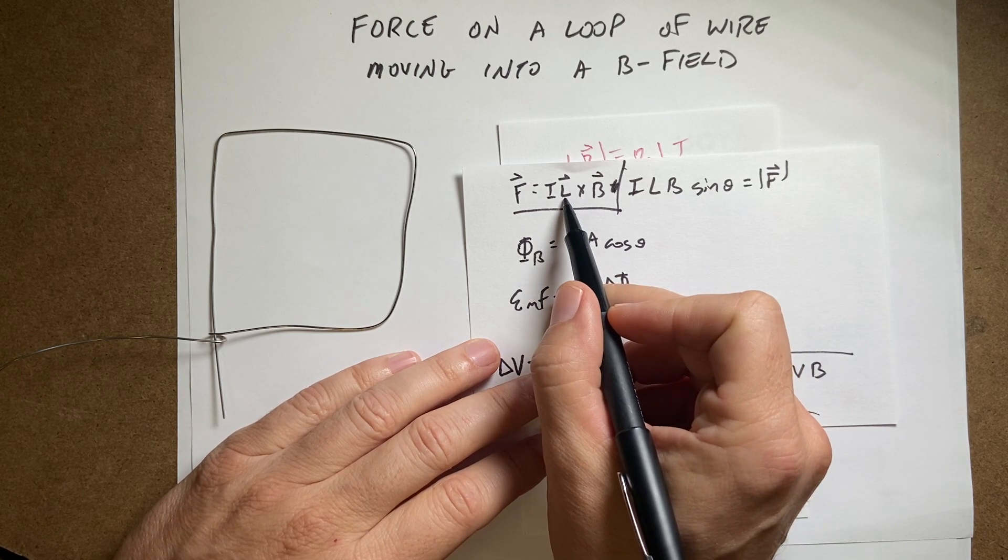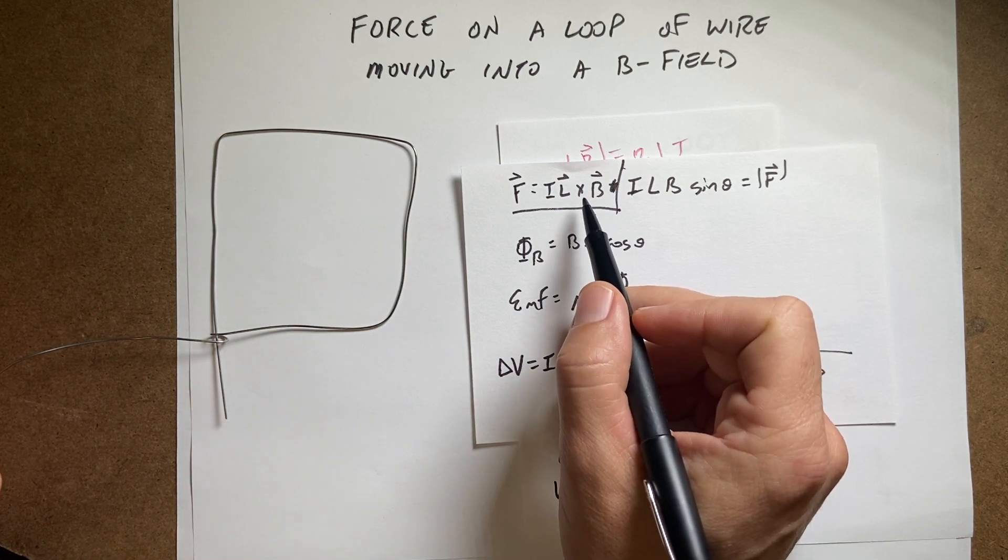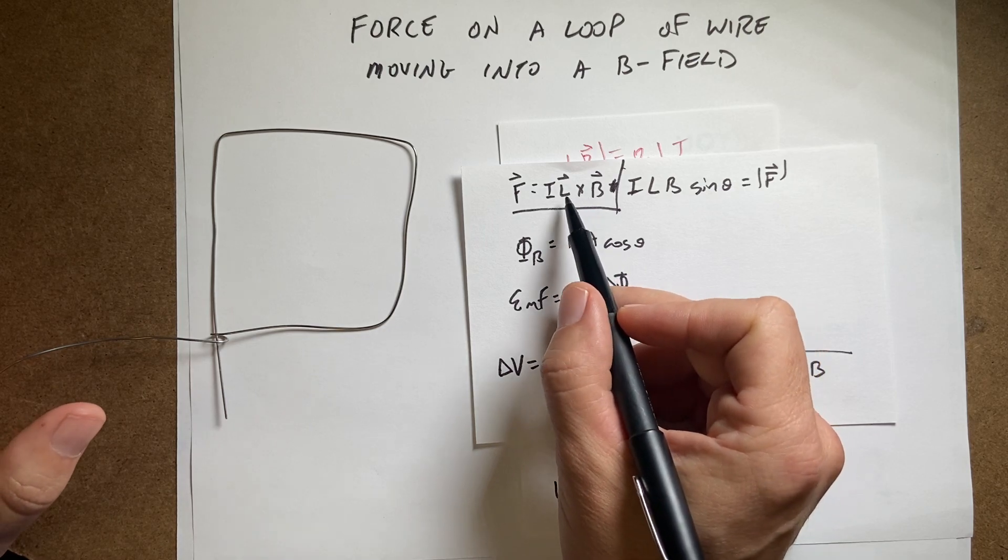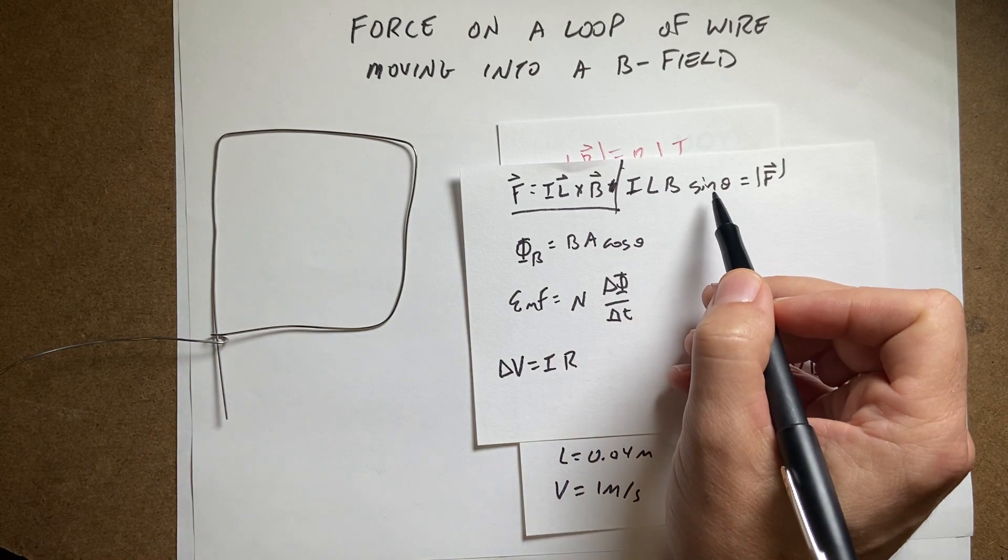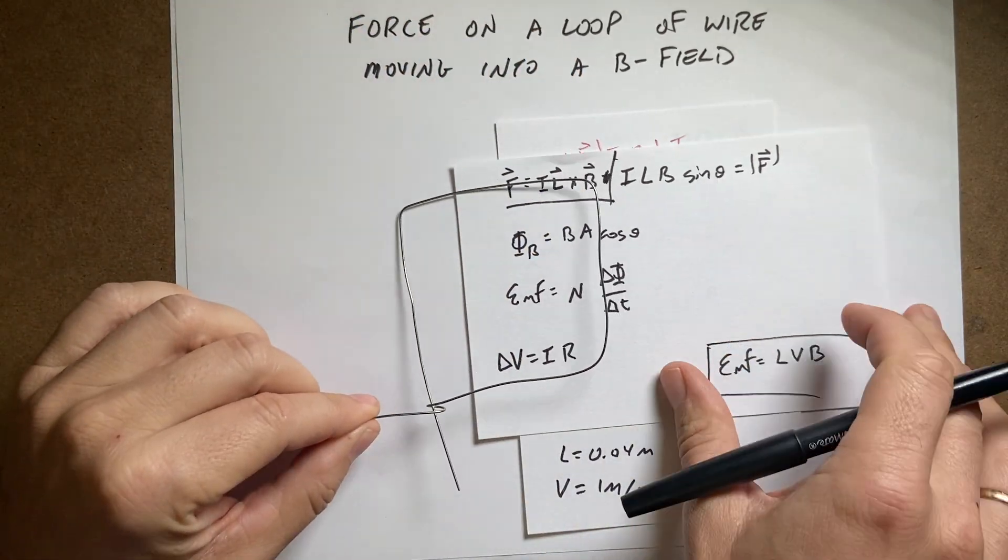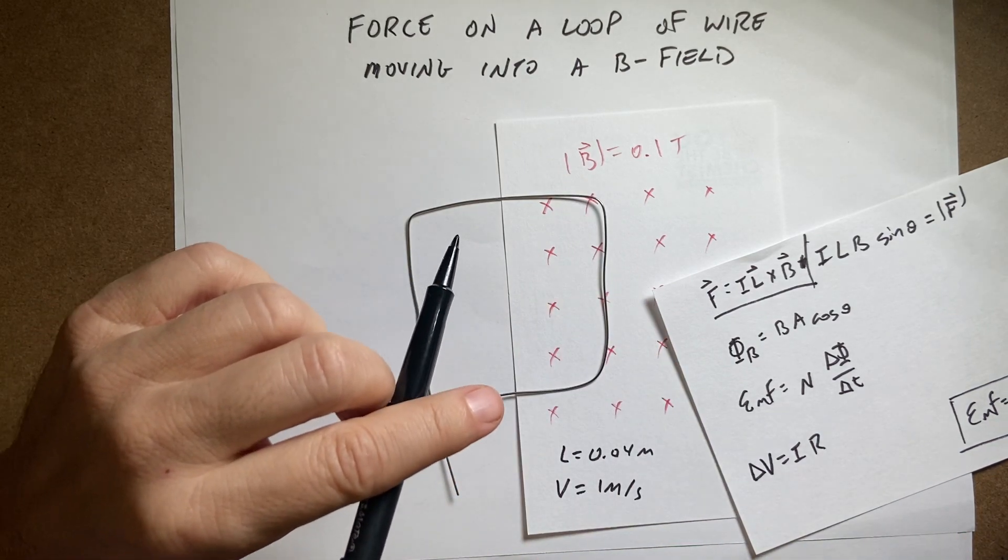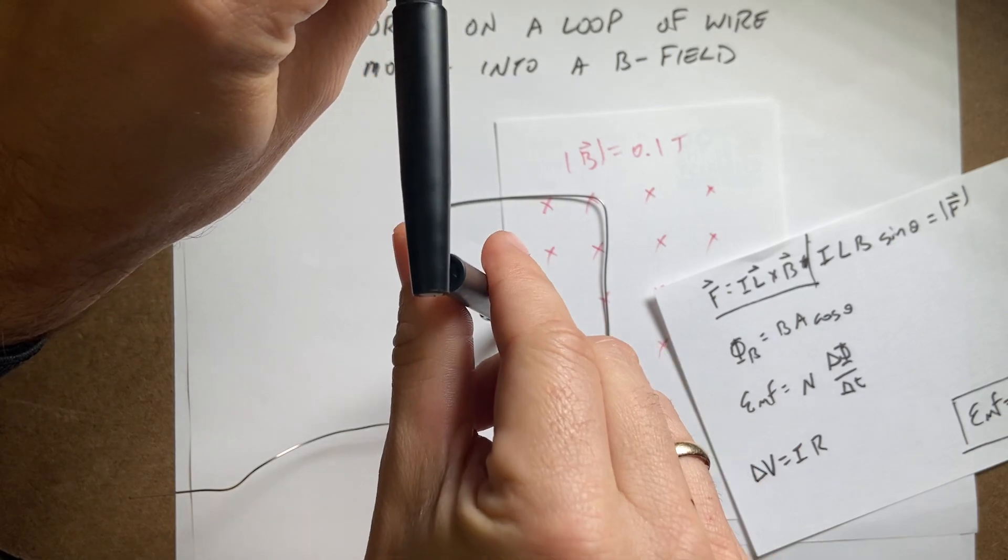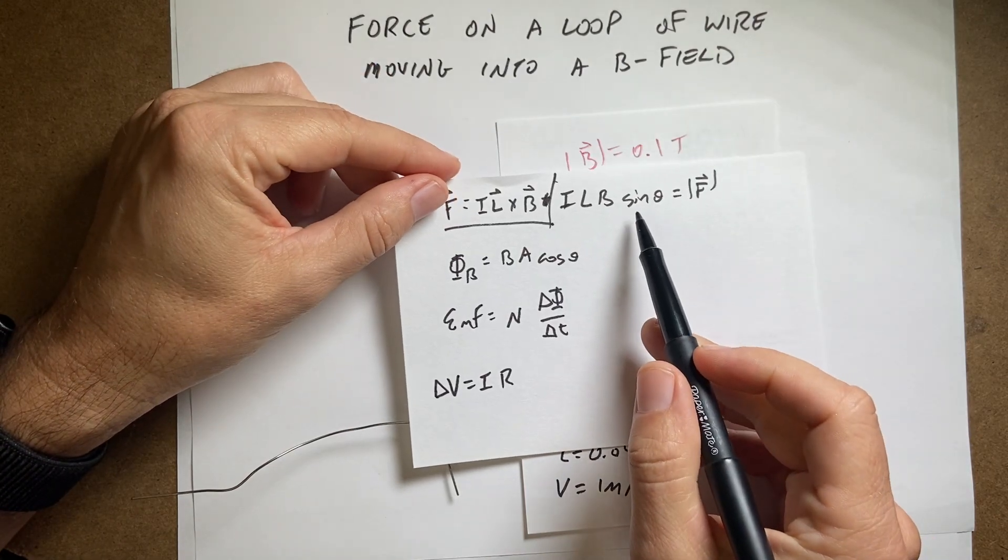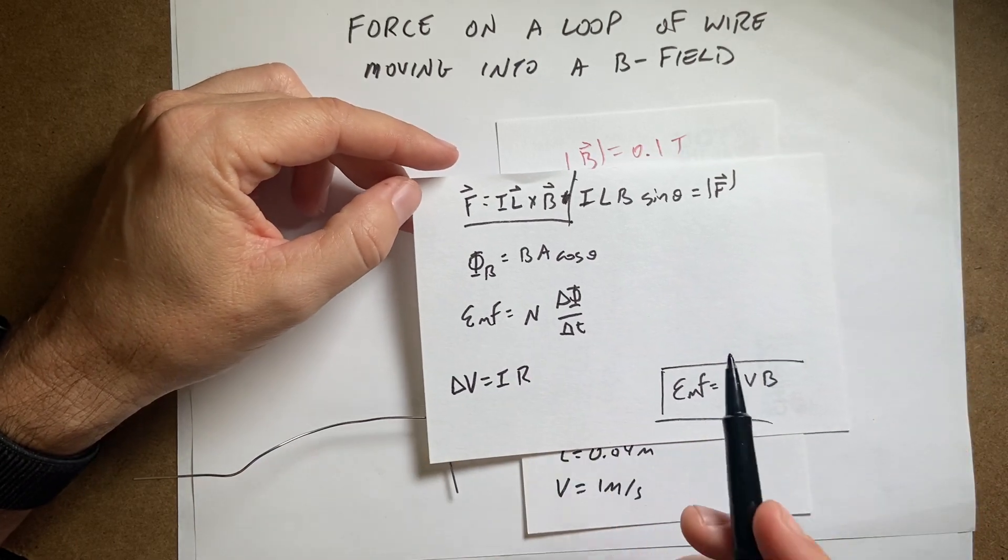This is the current times the vector length of the wire times the magnetic field. That's complicated. But let's just get the magnitude. So the magnitude of this force is just I L B sine theta. Where theta is the angle between the direction of the length and the direction of the magnetic field. So in this case, I have the wires going this way. Let's say the currents going that way and the magnetic field is this way going in. So the angle between those is 90 degrees and the sine of 90 degrees is 1. So the force is going to be I L B.